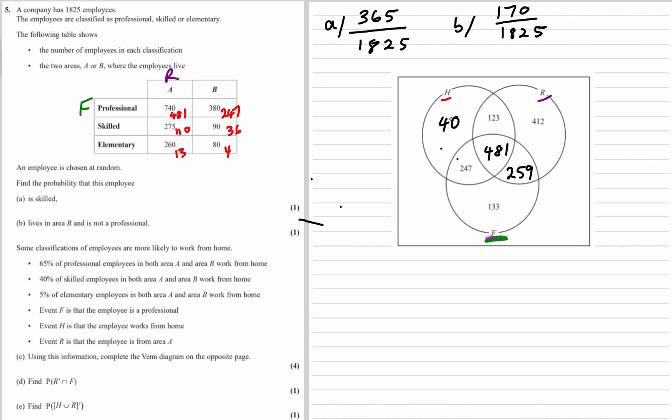And then the outside, so not professional, not in area A, and not working from home. So it's 170 take away the 40. That's 130.